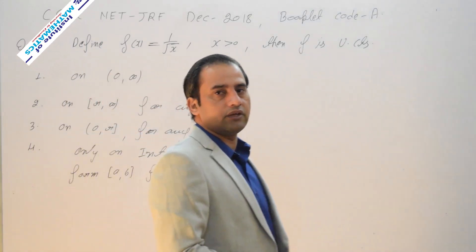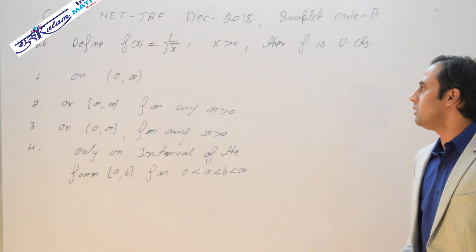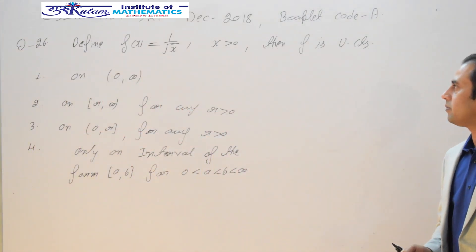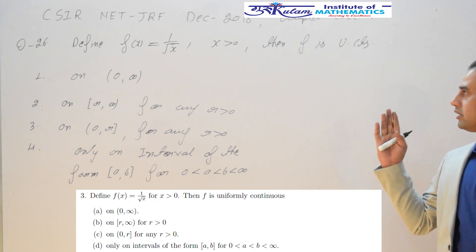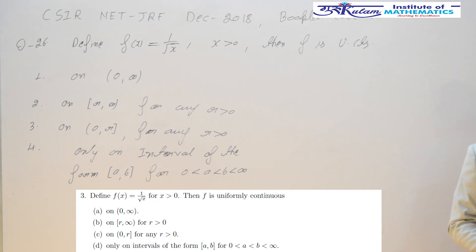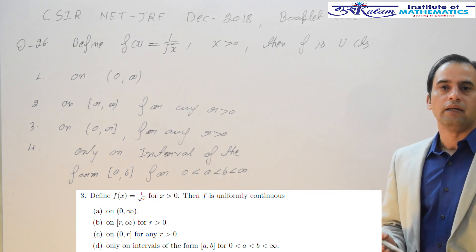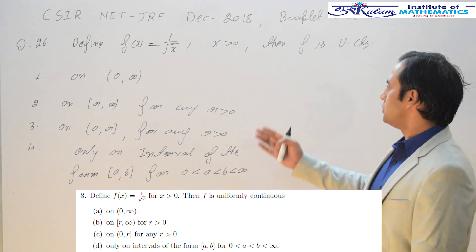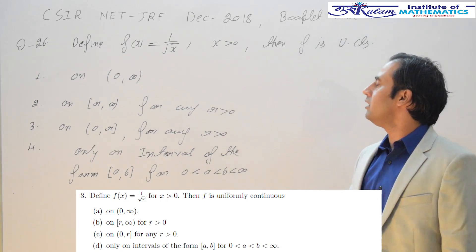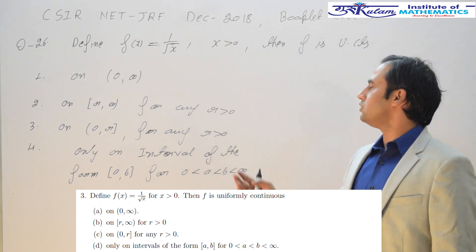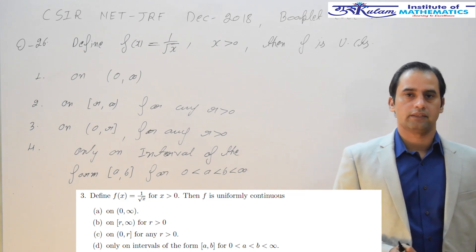In this lecture, we are going to discuss question number 26 from NET/GRF 2018, booklet A. This is a question from real analysis, specifically about uniform continuity of the function f(x) = 1/√x.